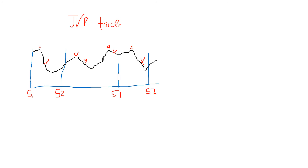Here I've made a sketch of the JVP trace. It starts at S1, which is the first heart sound, and S2, which is the second heart sound. The space between S1 and S2 is systole, and from S2 to S1 is diastole. Notice the difference in duration: S1 to S2 is shorter, whereas S2 to S1 is longer, because systole is shorter than diastole.